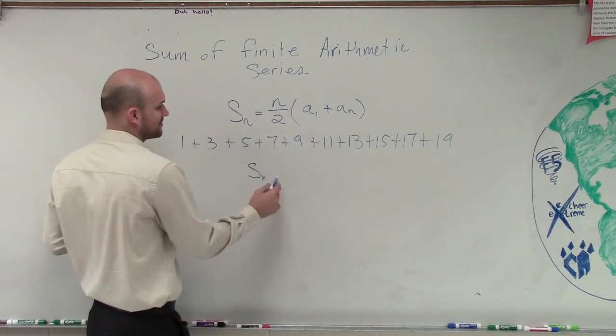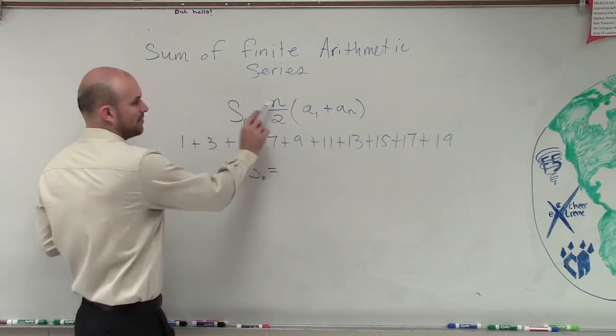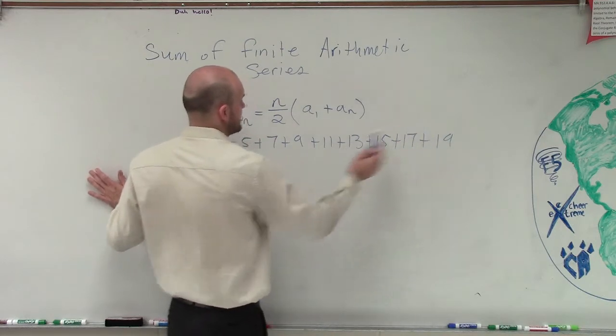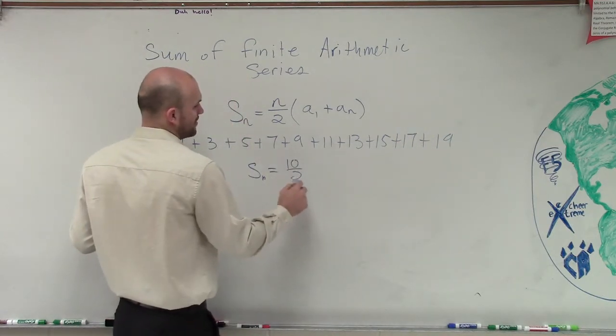So we could say the sum of this is going to equal the number of terms. So I have 1, 2, 3, 4, 5, 6, 7, 8, 9, 10. 10 divided by 2.